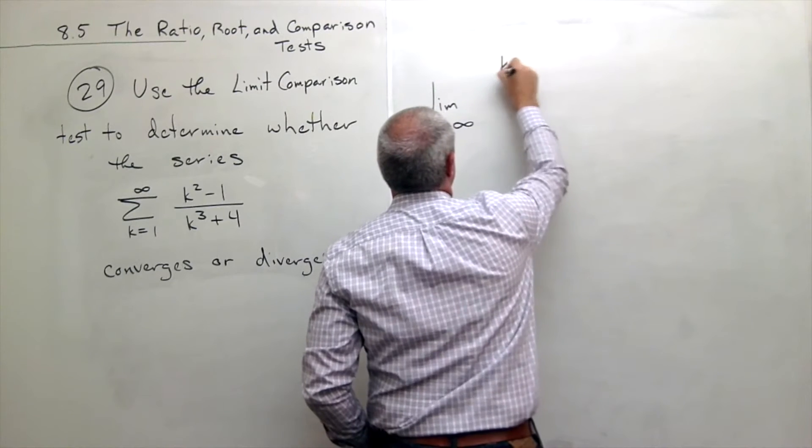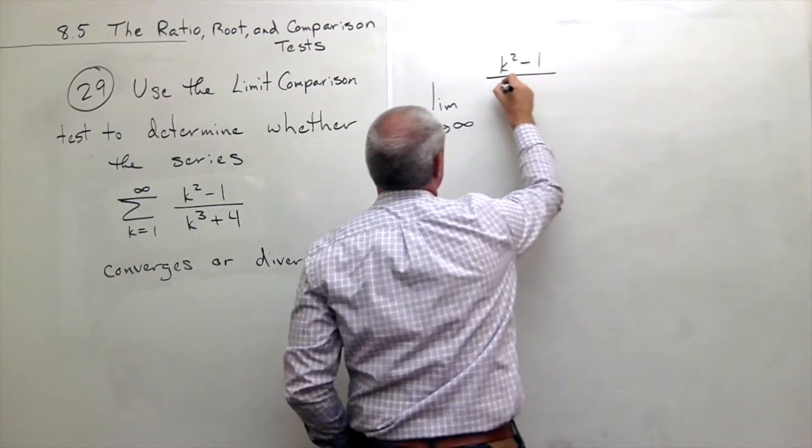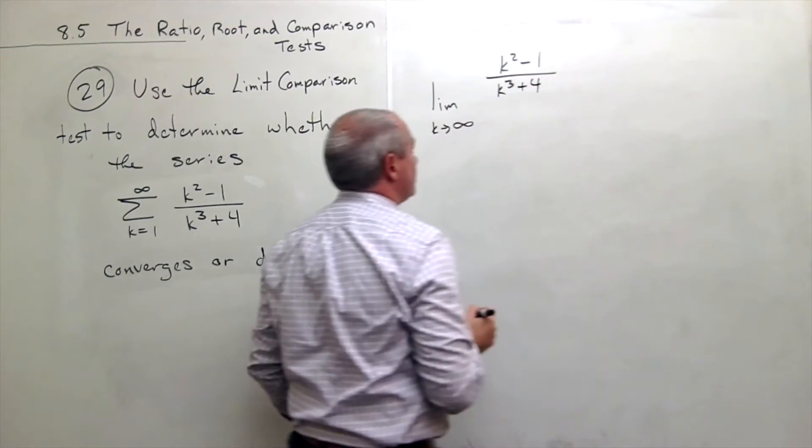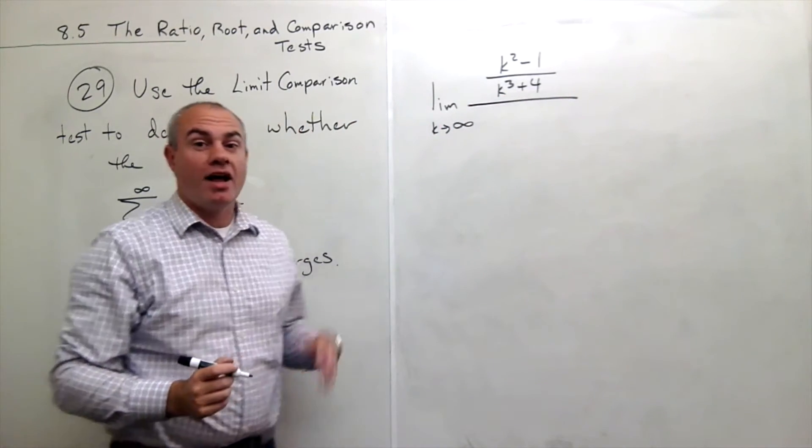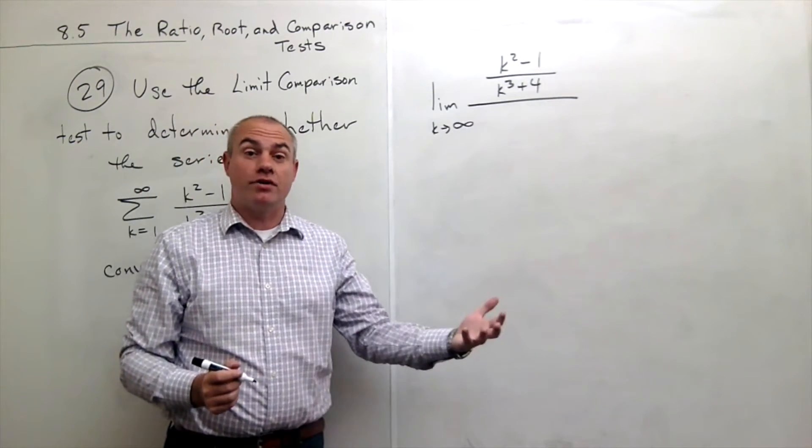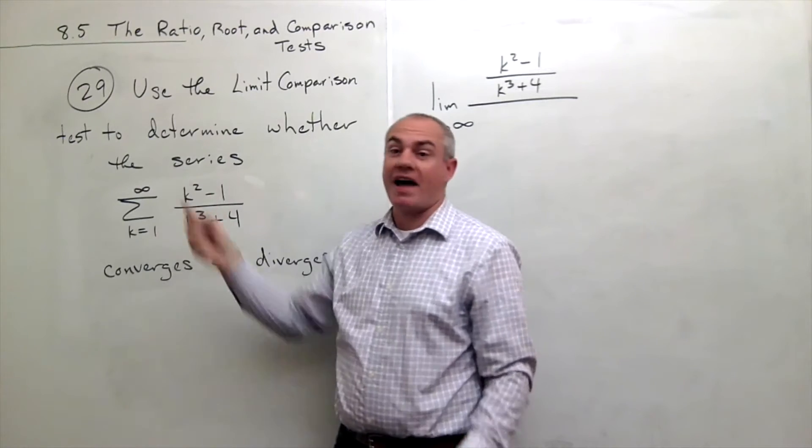So this is k squared minus 1 over k cubed plus 4 and I put it on top of the fraction. On the bottom of the fraction, I put the sequence of the series that I do know something about that I think this guy might kind of act like.